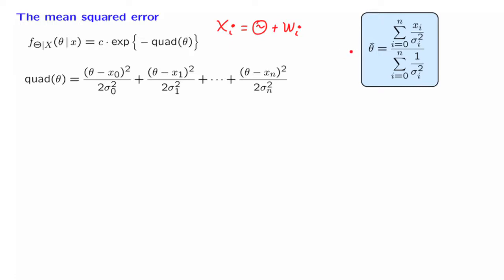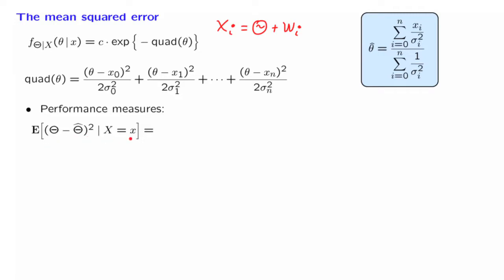Now that we have an estimate in hand, we can ask: how good is this estimate? For this, we need an appropriate performance measure. For estimation problems, a reasonable performance measure is the mean value of the squared error. But given that we have already obtained observations, what we're interested in is the conditional mean squared error — the error remaining after we have seen the observations.